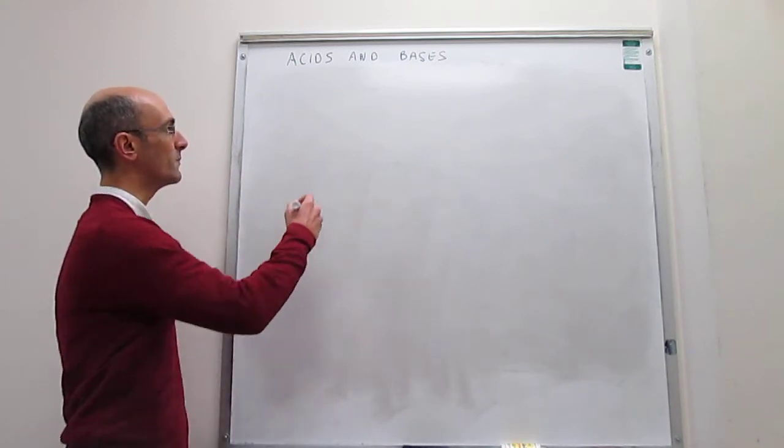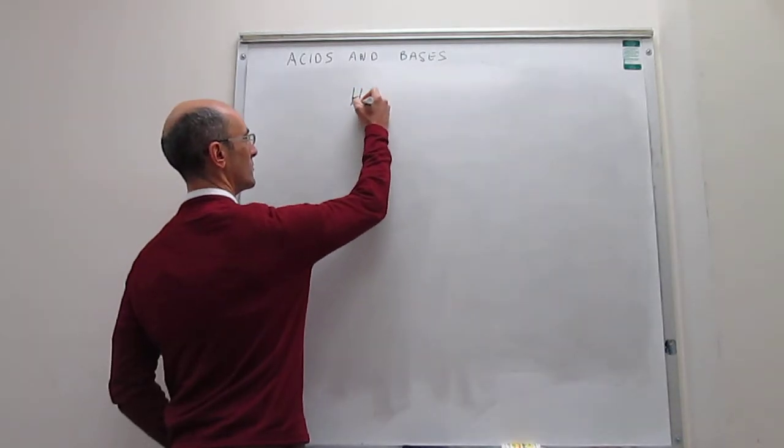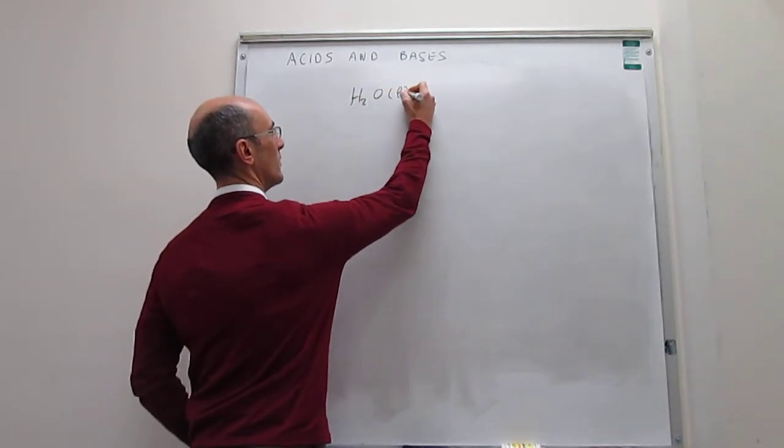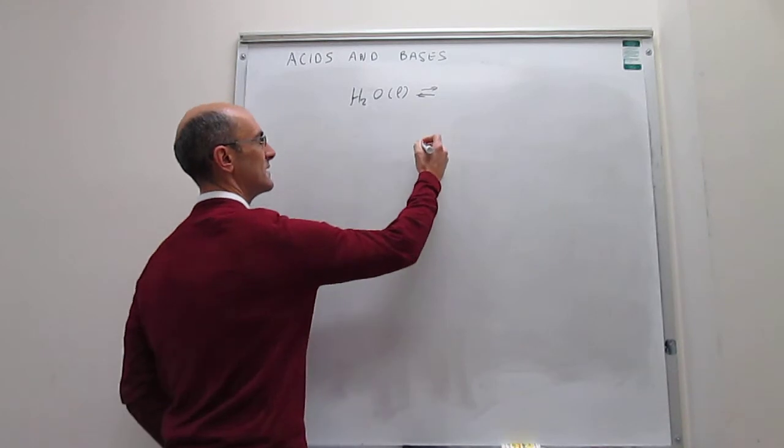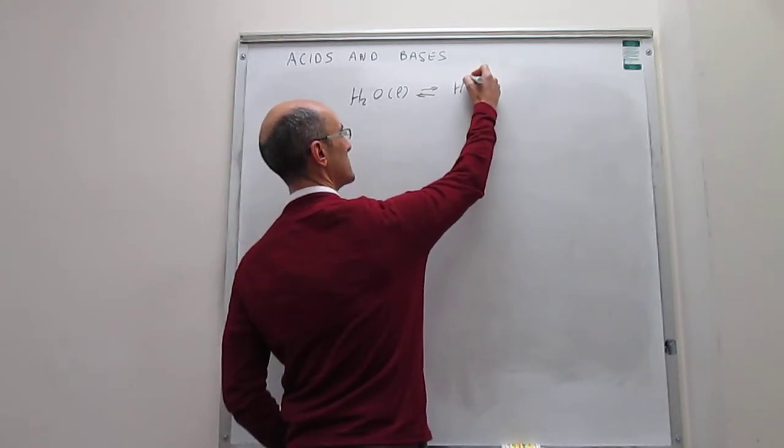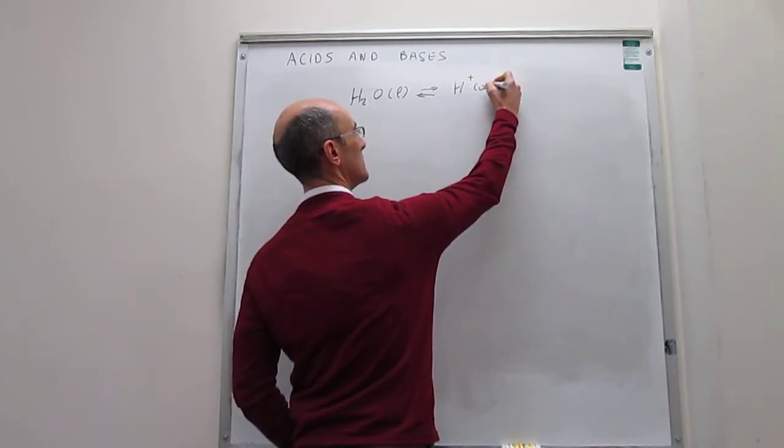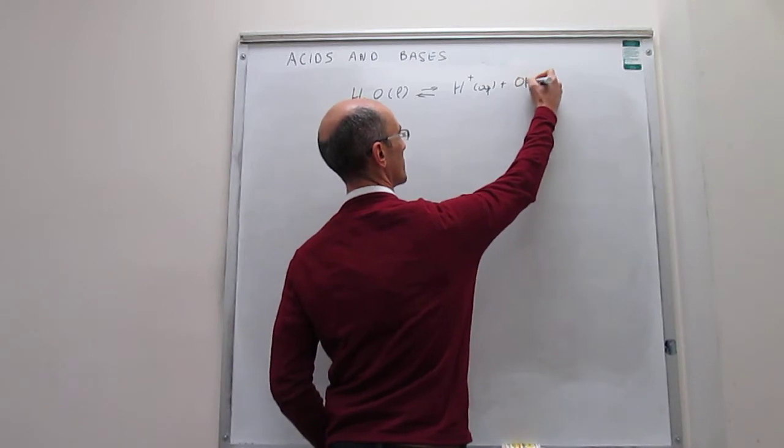In fact, there is an equilibrium for water which we control like this. Water is liquid, and the acid-base equilibrium is one in which it dissociates to a proton and it dissociates to hydroxide.